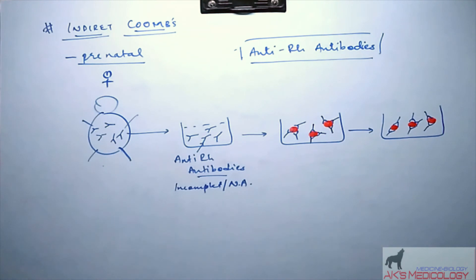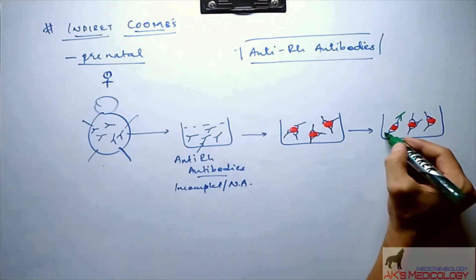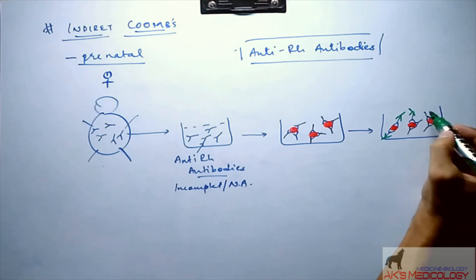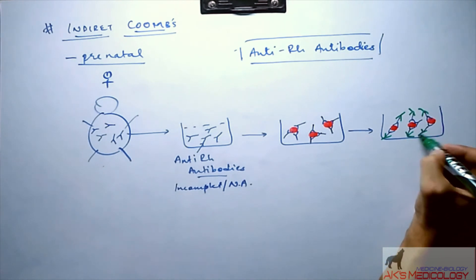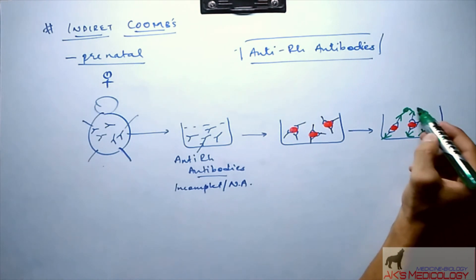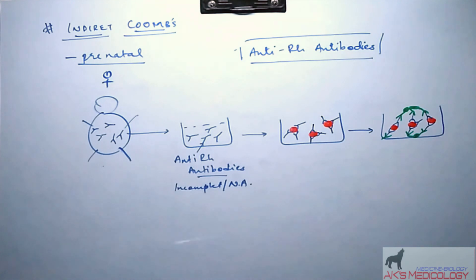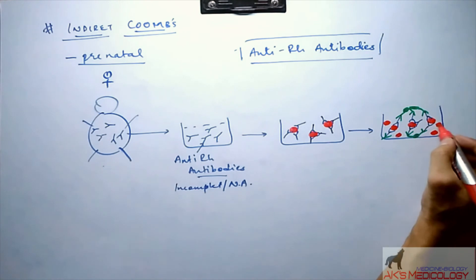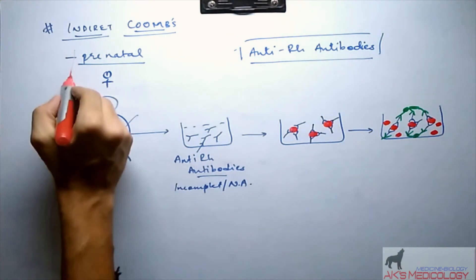The remaining step is the same — we add the Coombs reagent. The Coombs reagent contains antibodies against these anti-Rh antibodies. Addition of the Coombs reagent causes clumping or agglutination of these RBCs, which is visible in the test tube or collection beaker. This was the indirect Coombs test, performed in the prenatal condition.